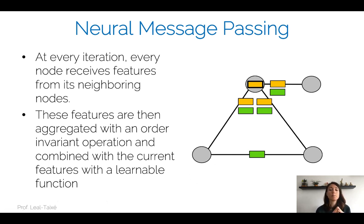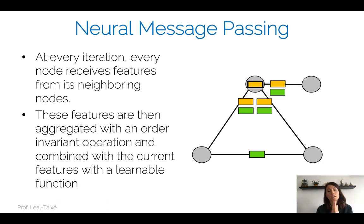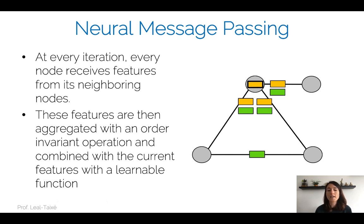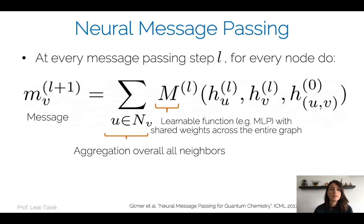To define a deep learning architecture that works for all nodes in the graph, I need a feature aggregation operation that is order-invariant and can take any number of inputs. Aside from the aggregation of neighbor information, this aggregation step also needs to include a learnable function. I want to know how to aggregate this information and how to process it. This needs to happen through a learnable function that I'm going to learn through backpropagation.